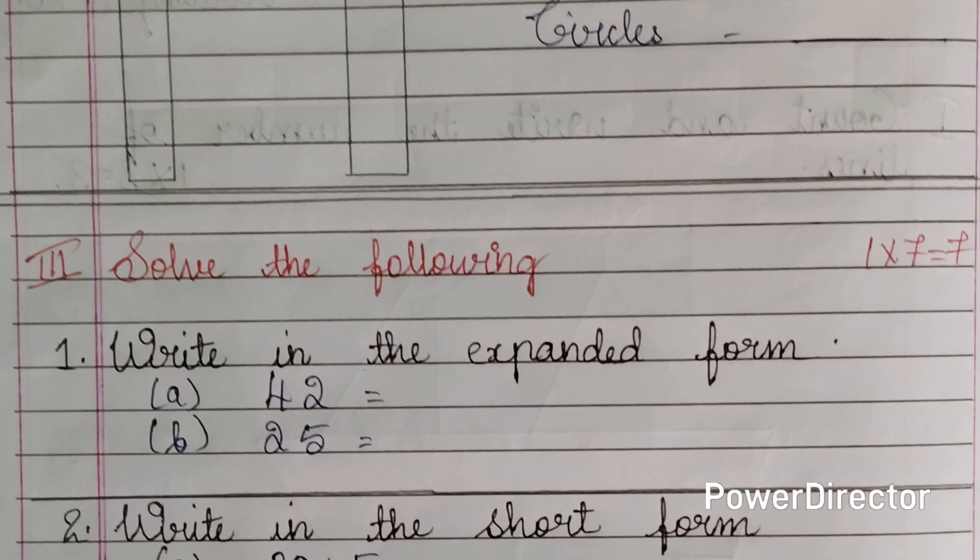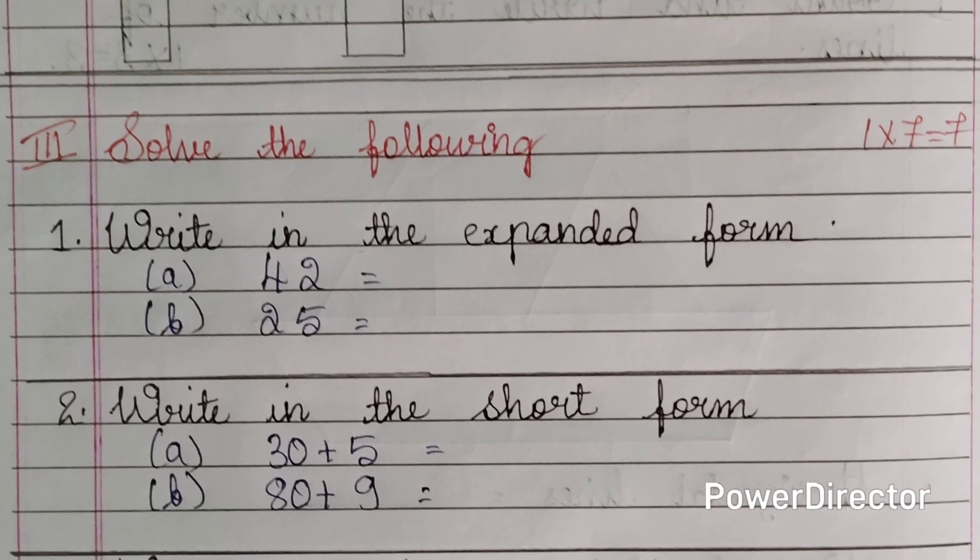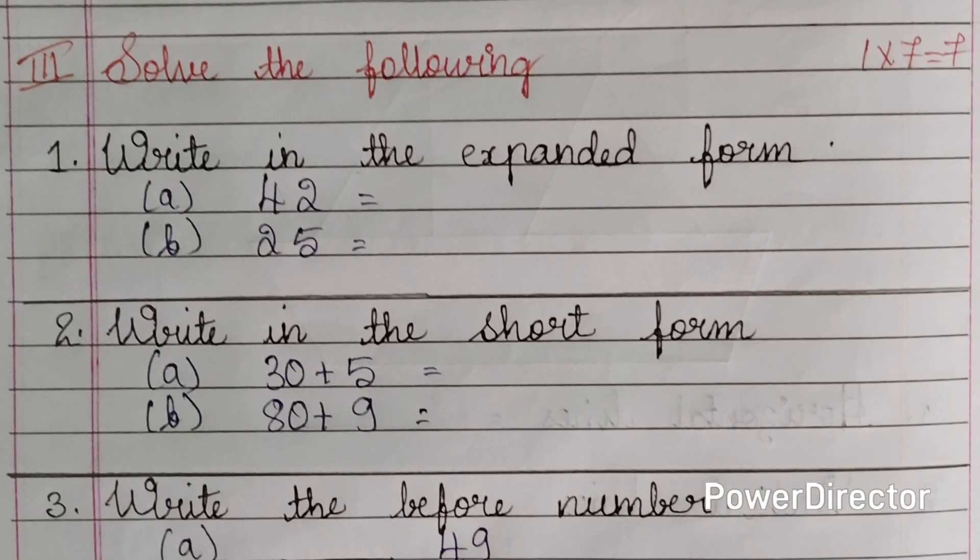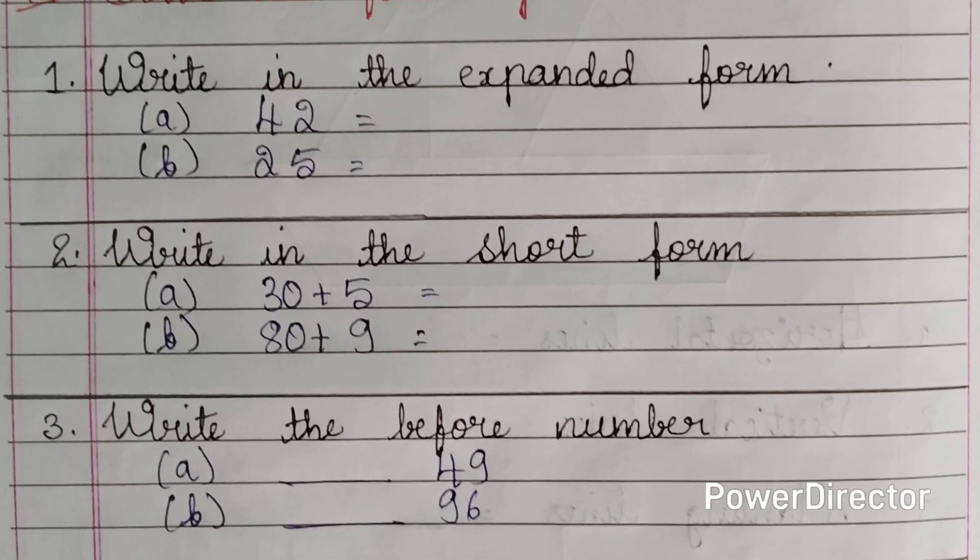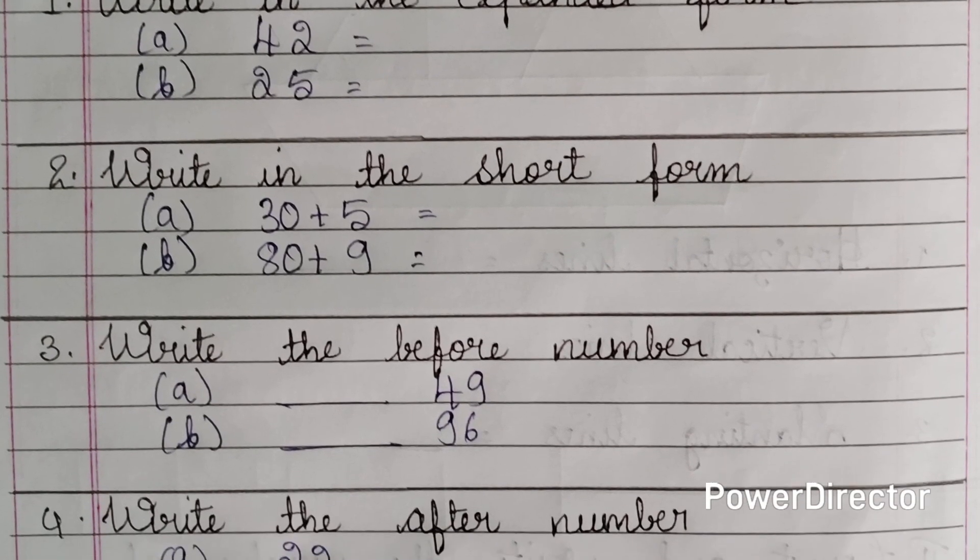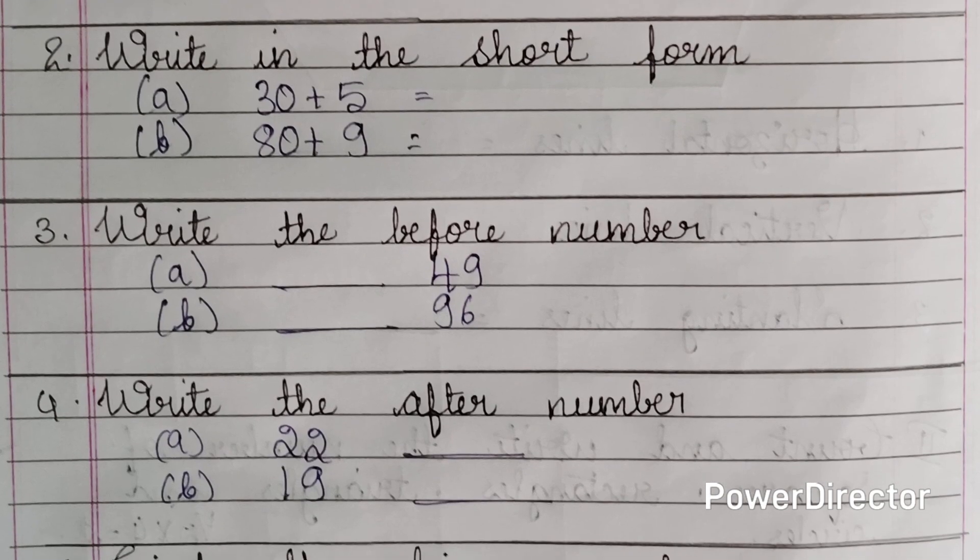Third main, solve the following. Seven questions are there, each question carries one mark. First one, write in the expanded form, two questions are there. Write in the short form, again two questions in it.